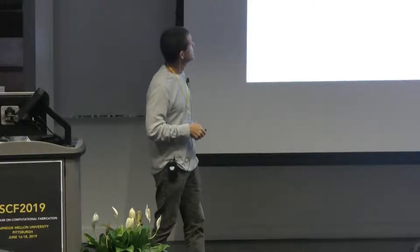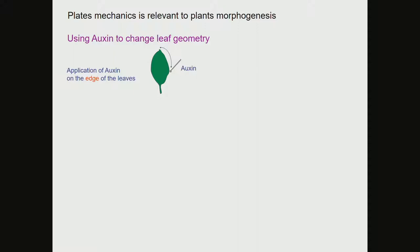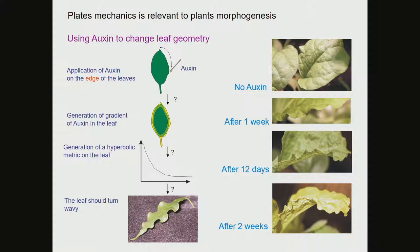This is also relevant to plant growth. You can apply growth hormone along the edge of a growing leaf that is naturally flat, inducing enhanced symmetric growth — a non-Euclidean metric. This is a demonstration with eggplant leaves: after we applied auxin, the growth hormone, along the edge, we got this multi-wave, three-dimensional structure.